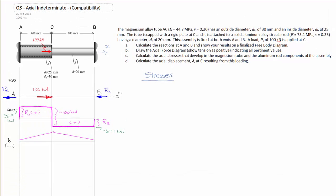With that done, we have our axial force diagram with known values completed. We can now go on to calculate the stresses in the two components, AC and CB, as requested in Part C.